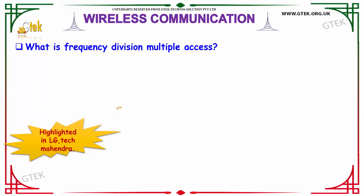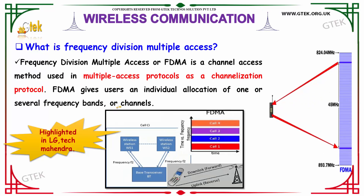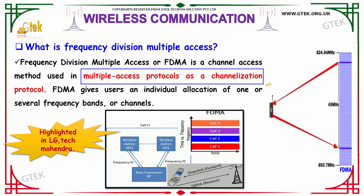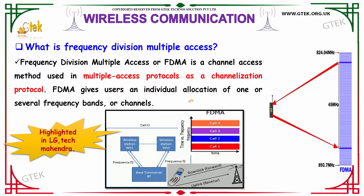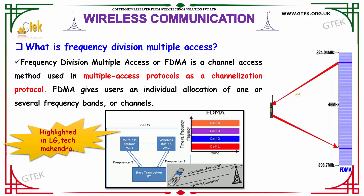What is meant by Frequency Division Multiple Access technique? FDMA is a channel access method used in multiple access protocols such as channelization protocol. FDMA gives the user an individual allocation of one of several frequencies or channels. If there are n number of frequencies, a user is given a particular range of frequency for communication. That frequency is allocated exclusively for that particular user — known as FDMA.